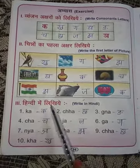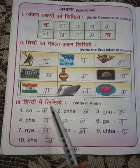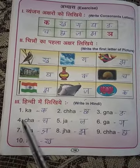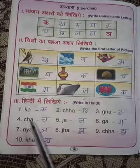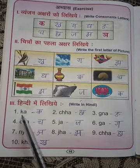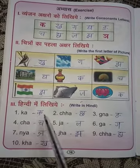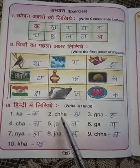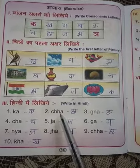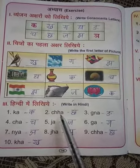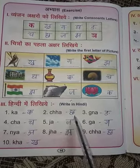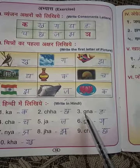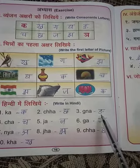Next exercise: write in Hindi. They gave the pronunciation in English and we want to write it in Hindi. First one: K-A — Ka. So this is the first letter Ka. Next: C-H-E — Cha. I will stress it: Cha. Then: Ga. This is the last letter of the first line — Ga. You have to write an S-type shape and put a dot.